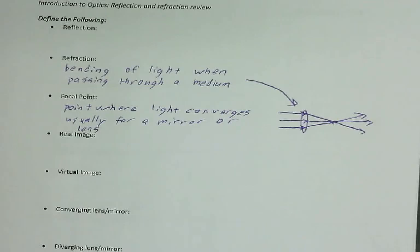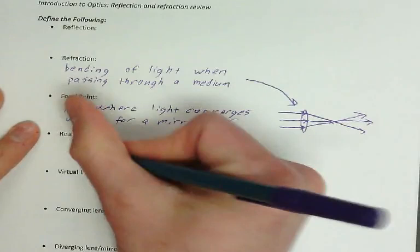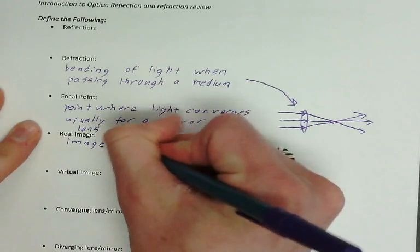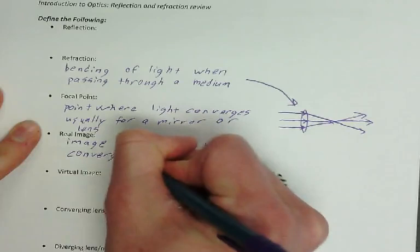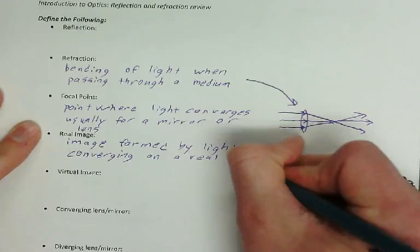Lucian, what you got for me? Pick one of these to define for me. It's an image formed by light that converges at the location. Good. So it's an image formed by light converging on a real point in space.